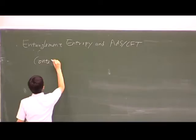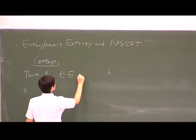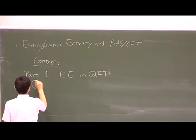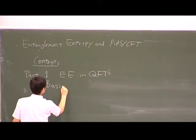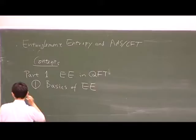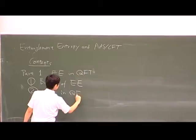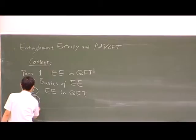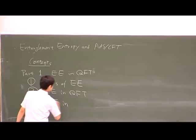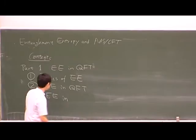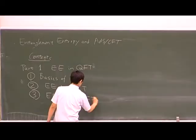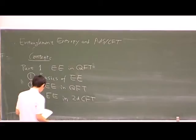The contents of these three lectures: today I'm going to talk about part one, which is entanglement entropy in quantum field theory. First I will explain the definition and basic aspects of entanglement entropy — definition and properties. Then I will talk about entanglement entropy in quantum field theory and give some basic properties such as area laws. Finally, I will show some explicit calculation of entanglement entropy, especially in two-dimensional conformal field theory.